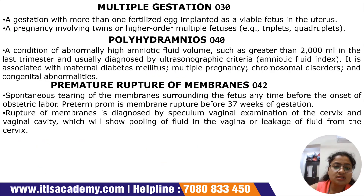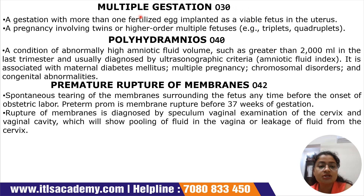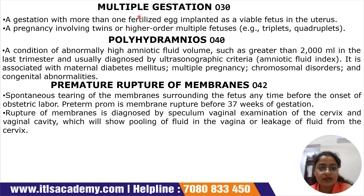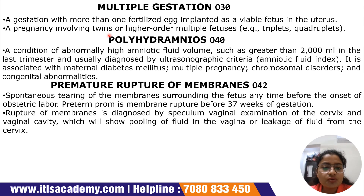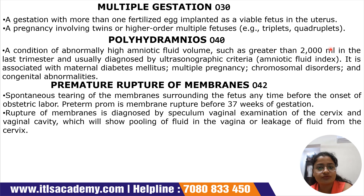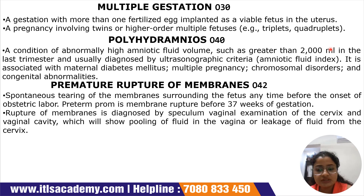The first condition to discuss is multiple gestation, code O30. Multiple gestation means more than one egg has been fertilized by sperm — the ideal condition producing twins or triplets. It is a gestation with more than one fertilized egg implanted as a viable fetus in the uterus, including twins, triplets, and quadruplets.